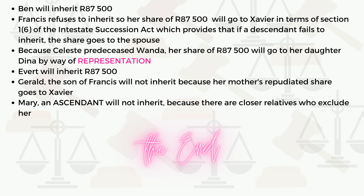Ben inherits 87,500 rand. Since Francis refuses to inherit, her share of 87,500 rand goes to Xavier in terms of section 1(6) of the Intestate Succession Act, which provides that if a descendant fails to inherit, the share goes to the spouse.